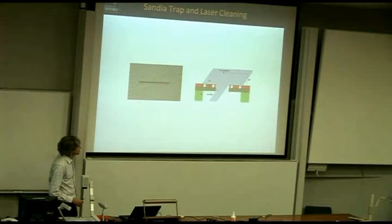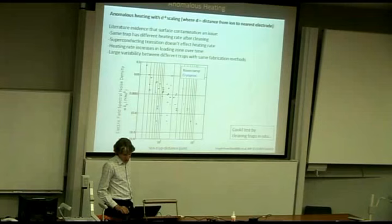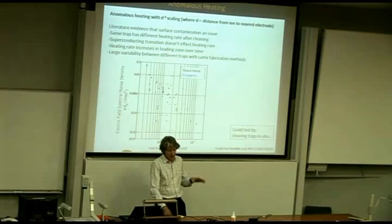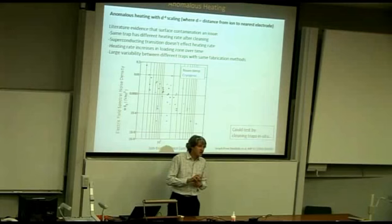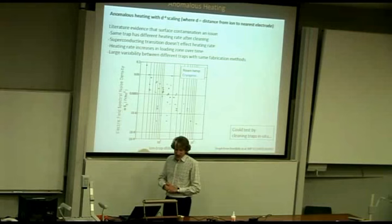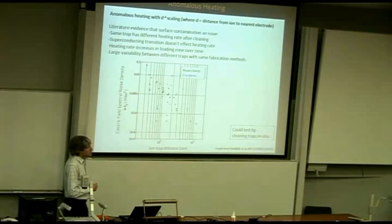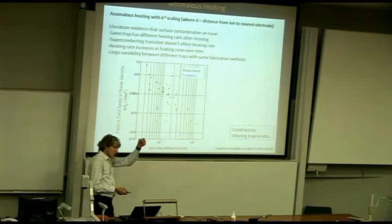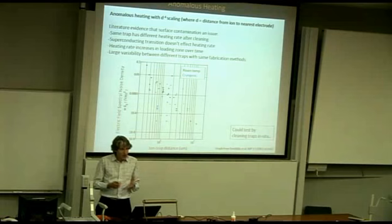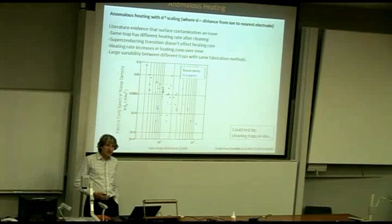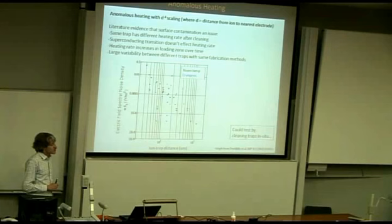We did an experiment on laser cleaning using the Sandia-made trap. This was motivated by an issue called anomalous heating in the ion trap community. When trying to do quantum logic using the motion of trapped ions, any noise in the electric field trapping those ions tends to heat them up, making quantum control more difficult. Empirically, over the last ten years, what has been found is that when you get close to the surface, this electric field noise gets much worse. Nobody really understands the origin of this noise — it varies widely in different traps, and it is way above any fundamental noise limit such as Johnson noise.